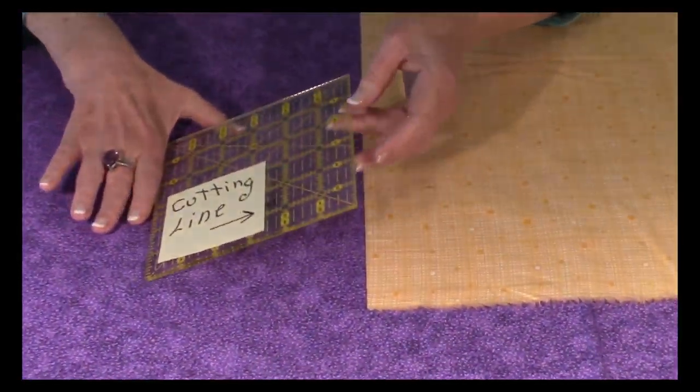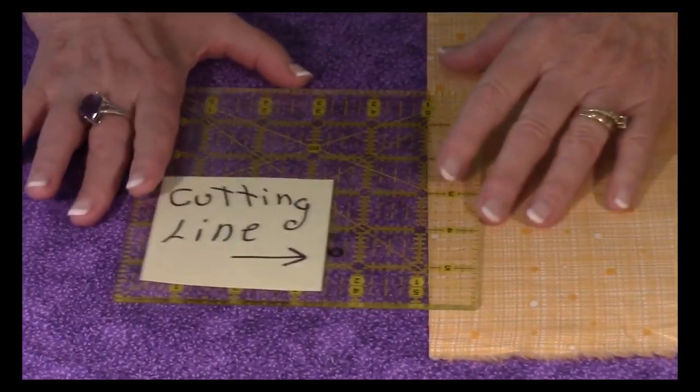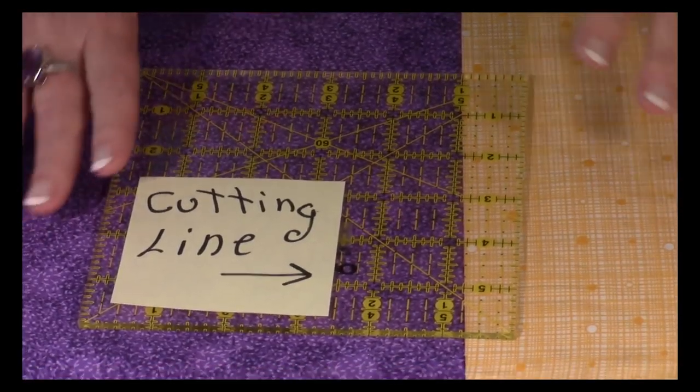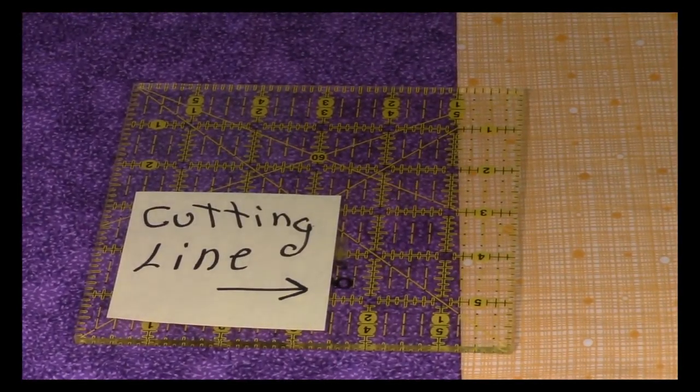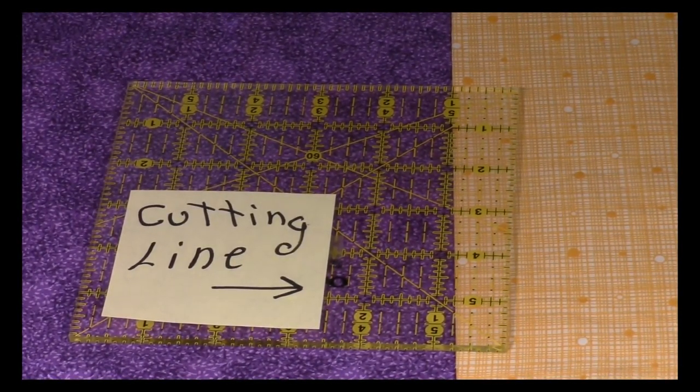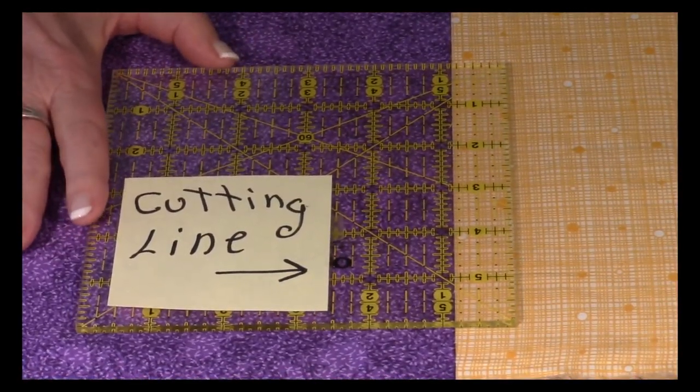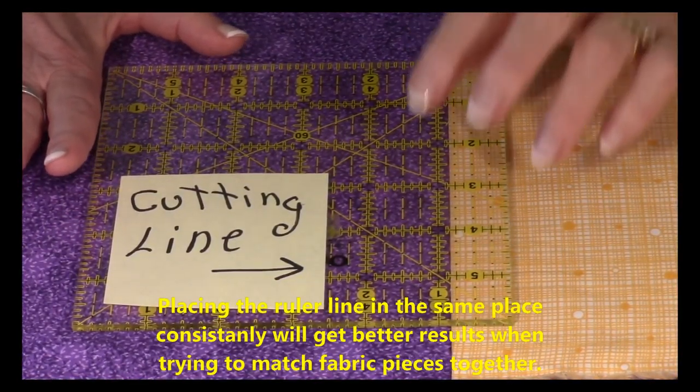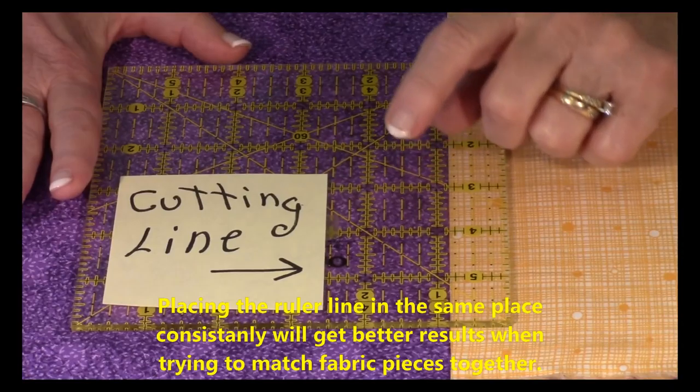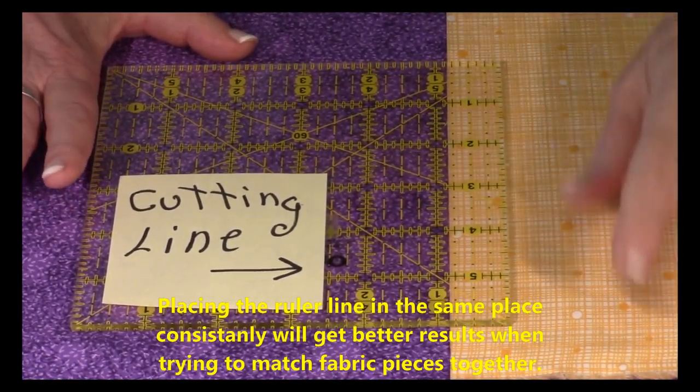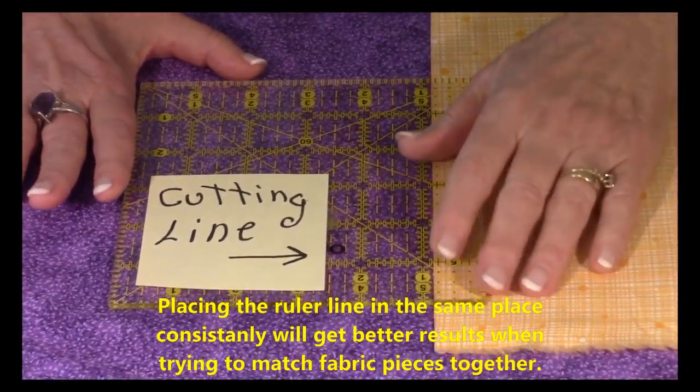So let's first take a look at your ruler. Now rulers, these cutting rulers come in a variety of sizes and shapes. It doesn't matter which one you're using, I'm going to mostly focus on where to place the line when you're cutting your fabric because that's real important.